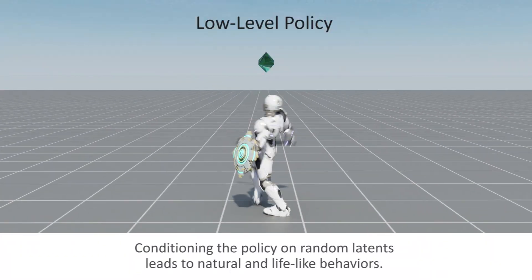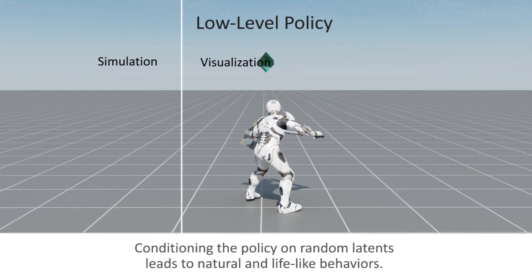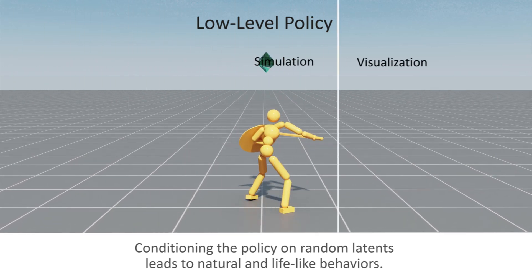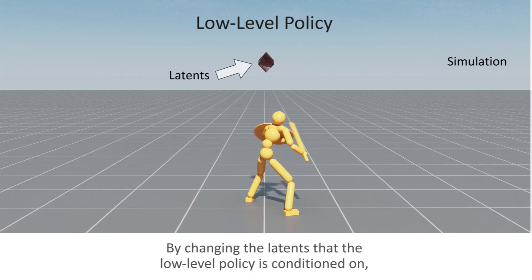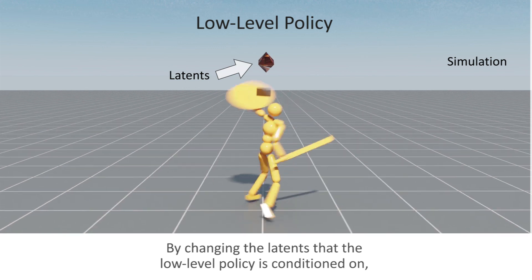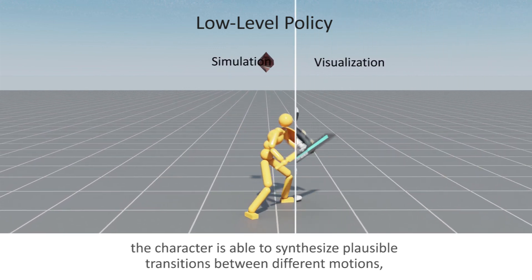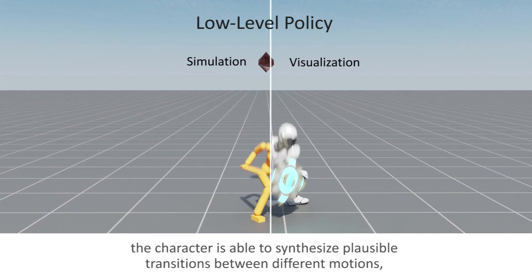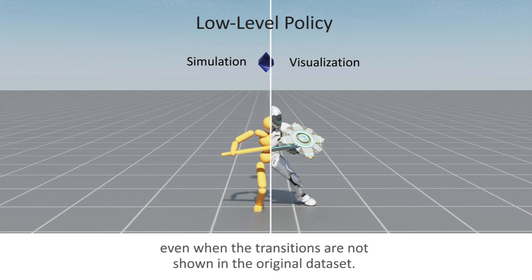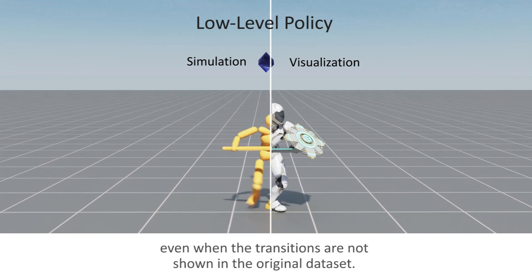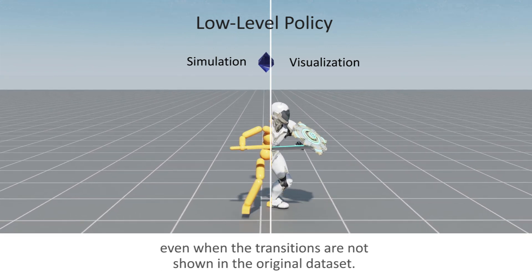Conditioning the policy on random latents leads to natural and lifelike behaviors. By changing the latents that the low-level policy is conditioned on, the character is able to synthesize plausible transitions between different motions, even when the transitions are not shown in the original dataset.